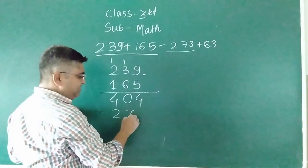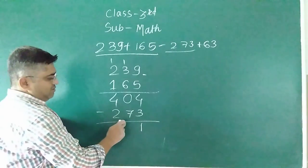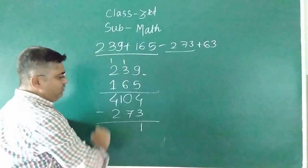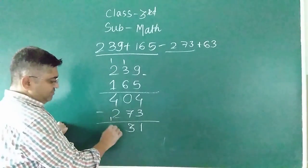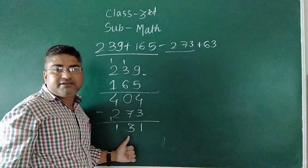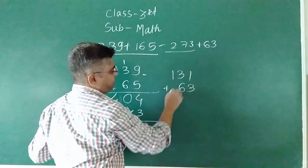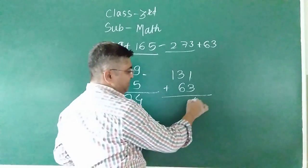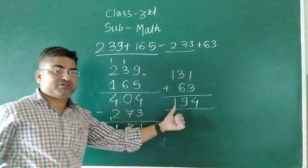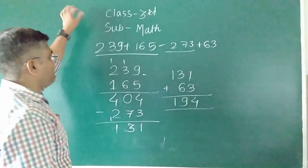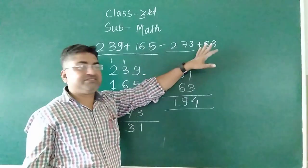Now subtraction, minus 273. See here, 4 minus 3 is 1. This is regrouping, so 10 minus 7 is 3. 4 minus 3 is 1. 131. Adding 63: 1 plus 3 is 4, 3 plus 6 is 9, 1. What is our answer? 194. So this is our answer. See here again, this number is given: 239 plus 165 minus 273 plus 63.